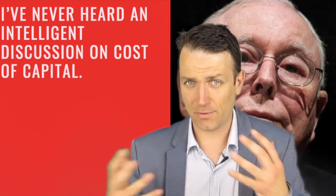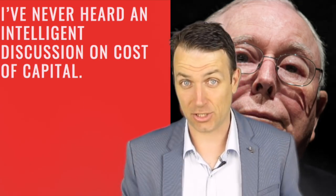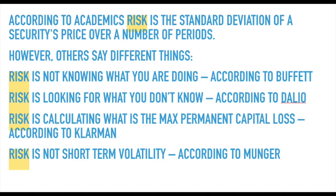That's a big difference between academics and practitioners. On the equity risk premium, according to academics, risk is the standard deviation of a security's price over a number of periods — beta coefficient, standard deviation. However, others define it differently: risk is not knowing what you're doing (Buffett); risk is looking for what you don't know (Dalio); risk is calculating the maximum possible permanent capital loss (Klarman); risk is not short-term volatility (Munger).